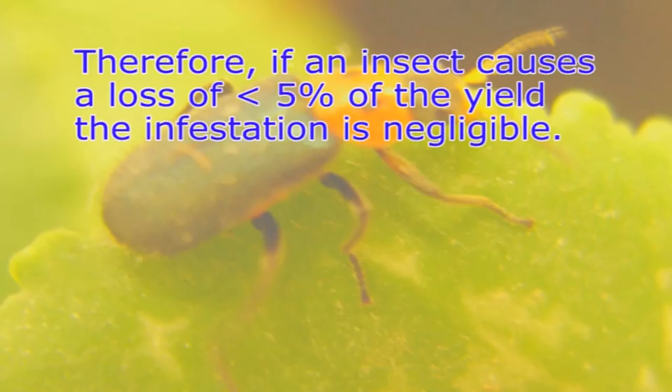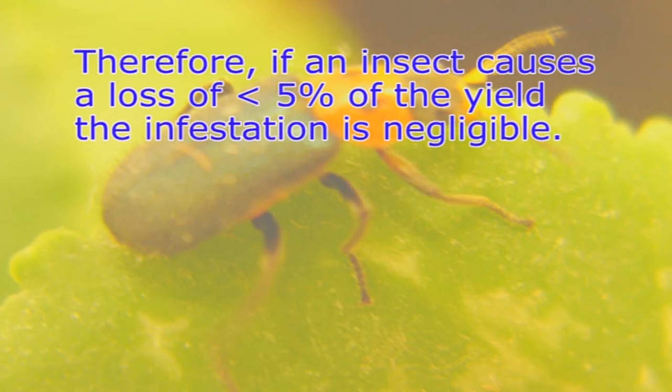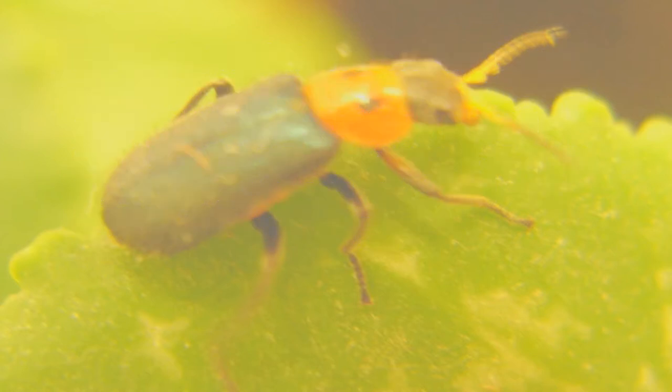This is also referred to as the economic threshold. For deciding this, the arbitrary limit can be fixed, such as the size of the population responsible for a 5 percent loss in yield — this level is called the pest status. If an insect causes a loss of less than 5 percent of the yield, the infestation is negligible. Insects which normally cause a loss ranging from 5 to 10 percent are said to be minor pests, while those causing 10 percent or more are called major pests.